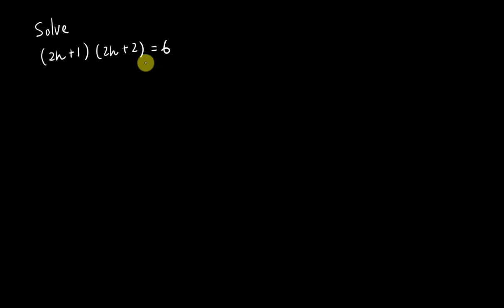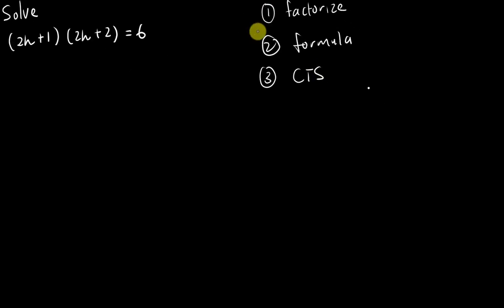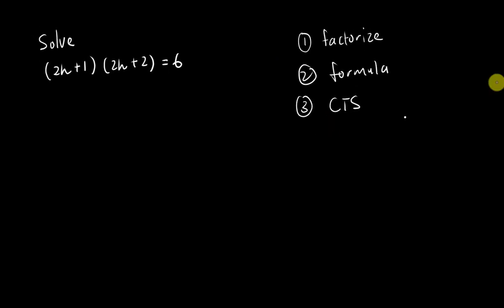There are a few ways to solve the quadratic equation. The first method is to simply factorize and solve it. The second method is to use the quadratic formula. The third method — which seldom appears in SPM — is completing the square. I always recommend students to try the first method first. If it doesn't work, go for the formula. You only use completing the square if the question asks you to sketch a graph or find the maximum/minimum point.